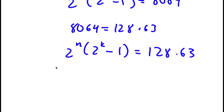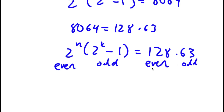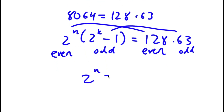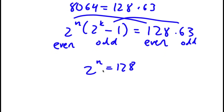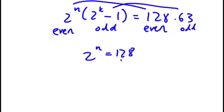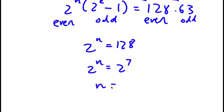Notice that 2 to the power of n is even and 2 to the power of k minus 1 is odd, because 2 to the power of k is even and an even number minus 1 is odd. And 128 is even while 63 is odd. So I can set the even parts equal to each other and the odd parts equal to each other. So 2 to the power of n equals 128, which is 2 to the power of 7, meaning n equals 7.